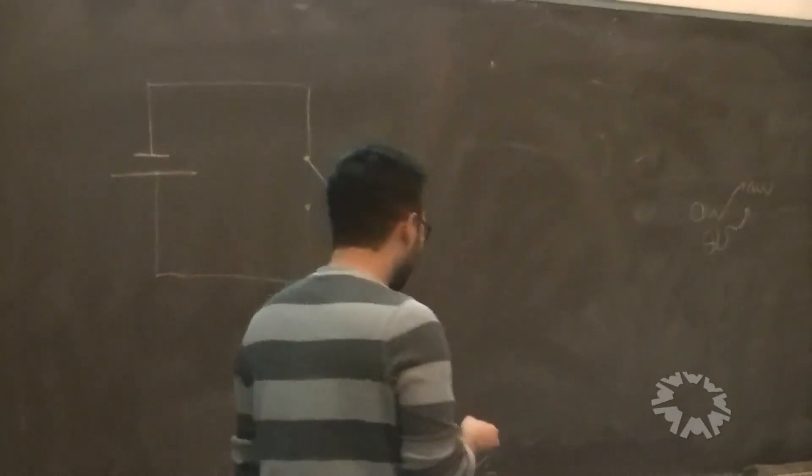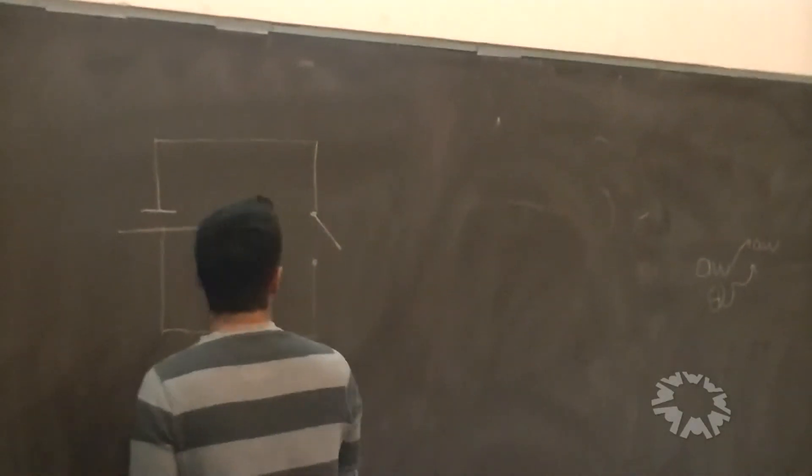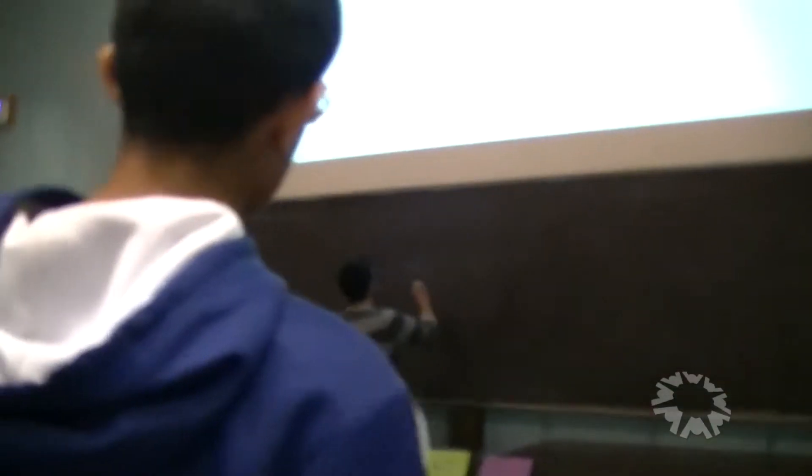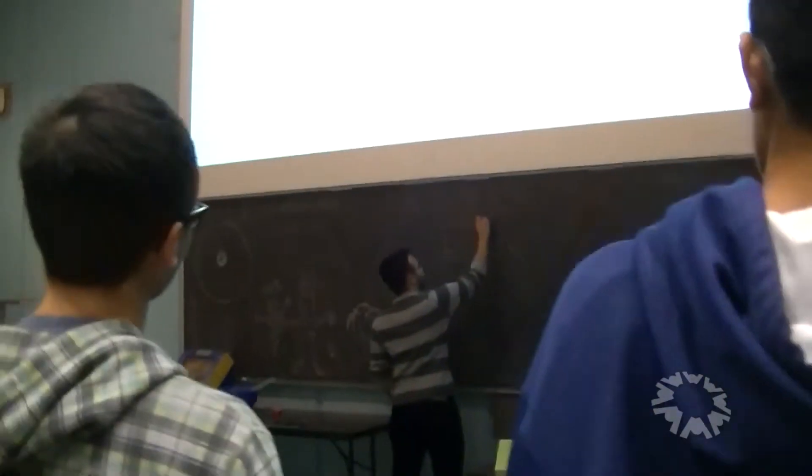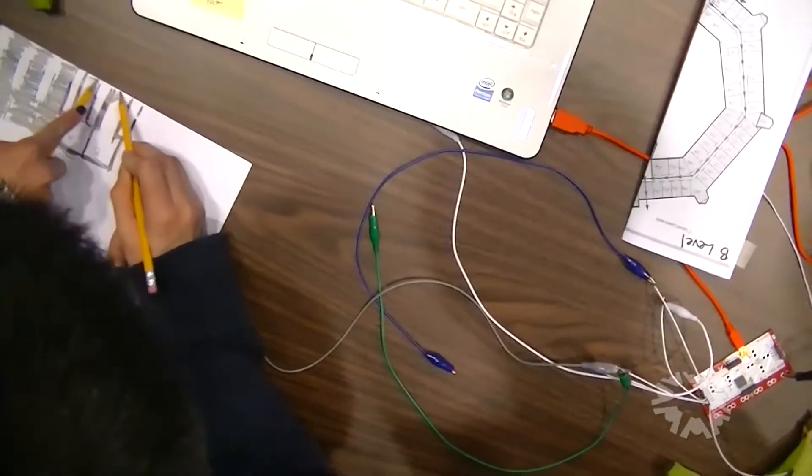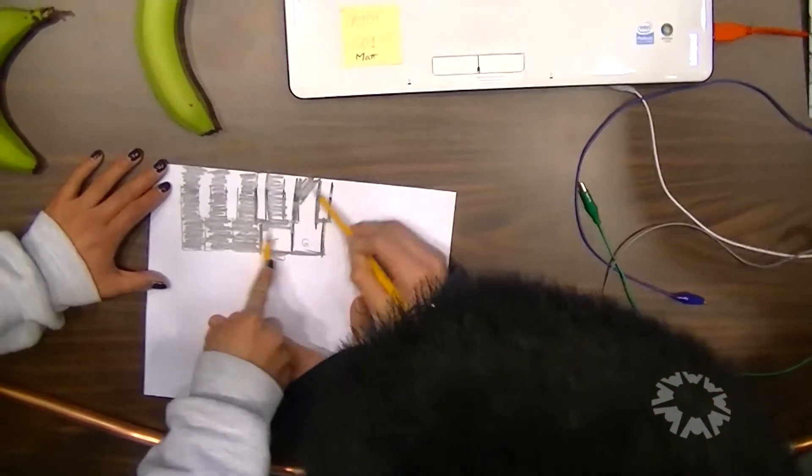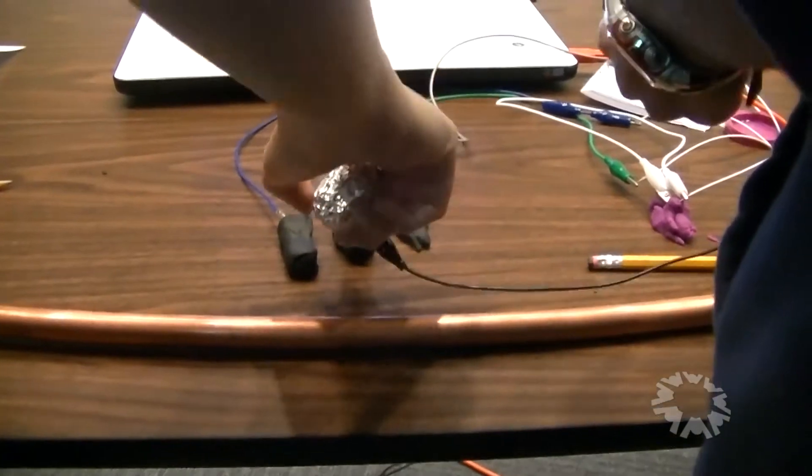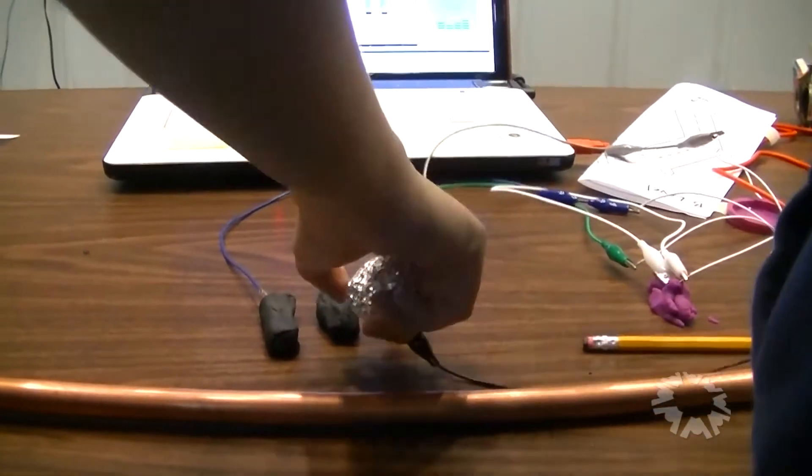Then AJ described how a circuit works. The principle of a makey-makey is simple. Create a circuit using everyday objects and your computer thinks the makey-makey is a keyboard.